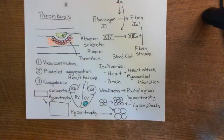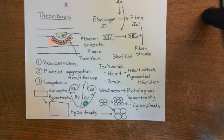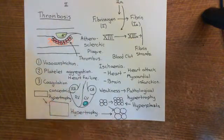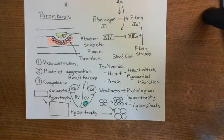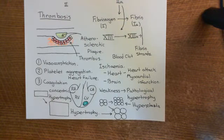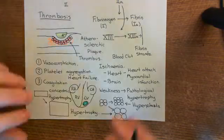Turning to the brain — if you cut off blood supply to a certain region of the brain, those neurons will die if you leave the blood supply off for long enough. You don't get hypertrophy of neurons. When that happens, it's known as a cerebrovascular accident.